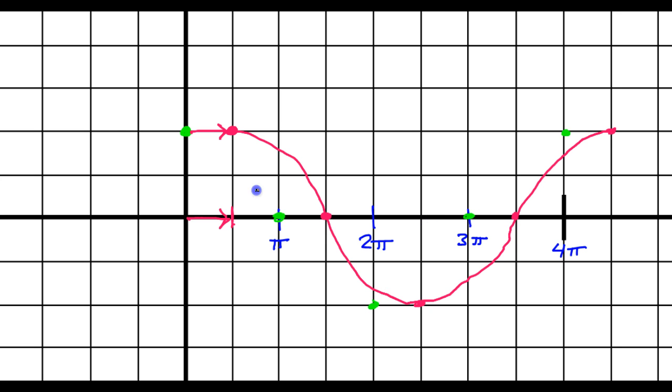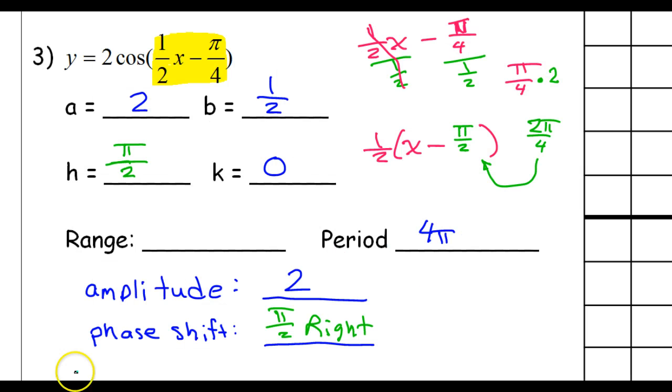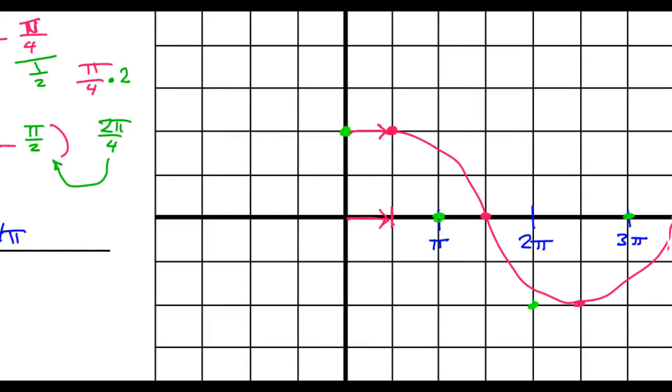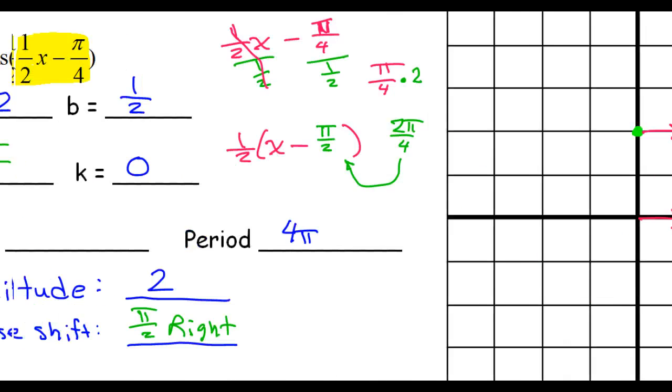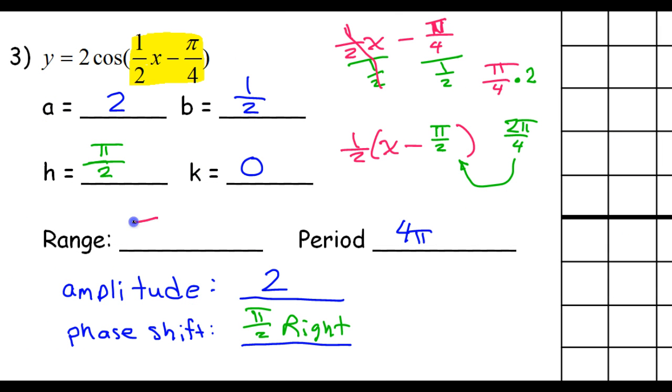And that's one period of this cosine function. The range is really going to pertain to the amplitude. From bottom to top, it hits a low of negative 2 and high of positive 2. So, the range will be negative 2 to positive 2, including negative 2 and positive 2. So, I'll use brackets.